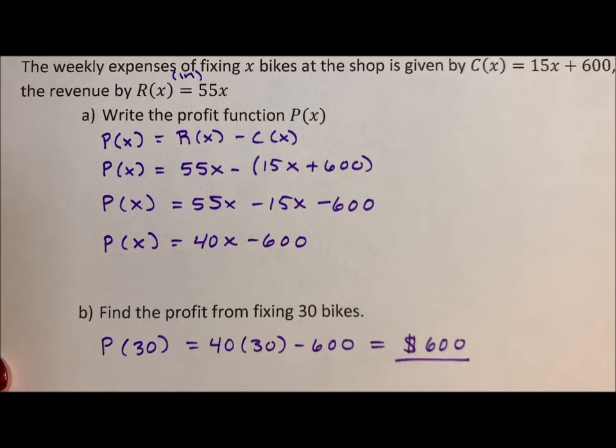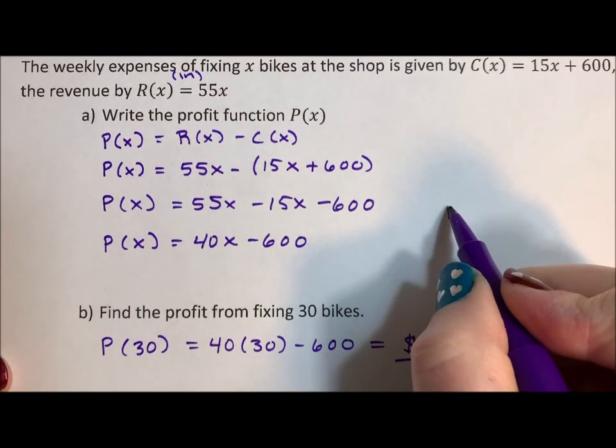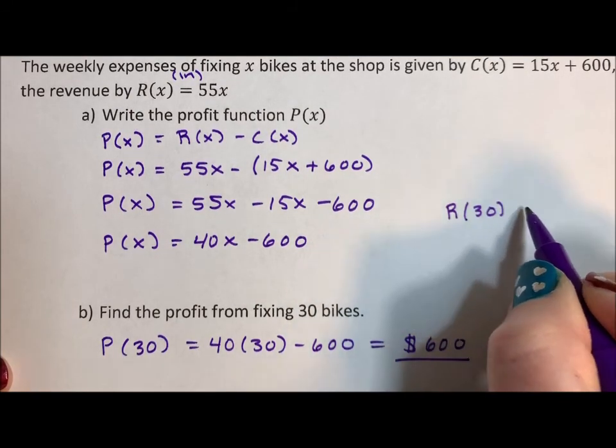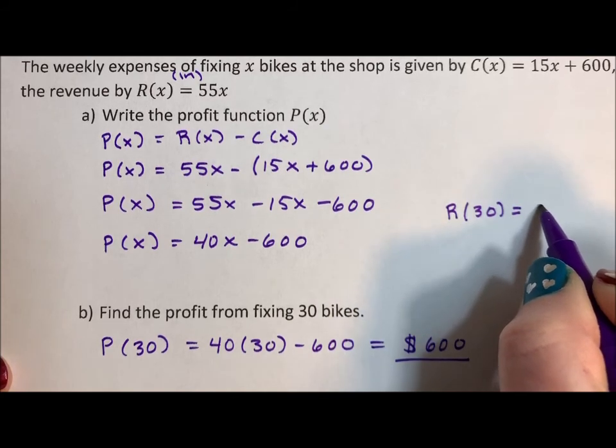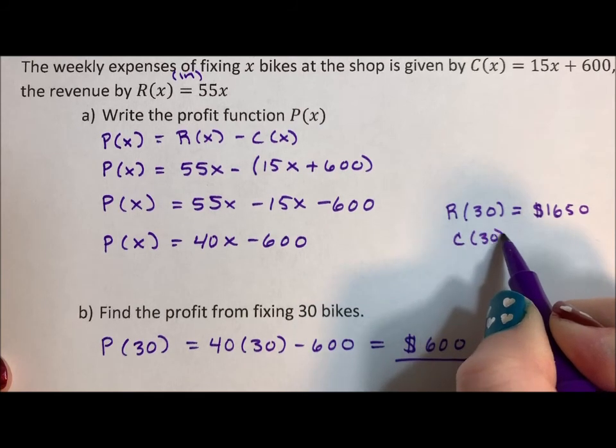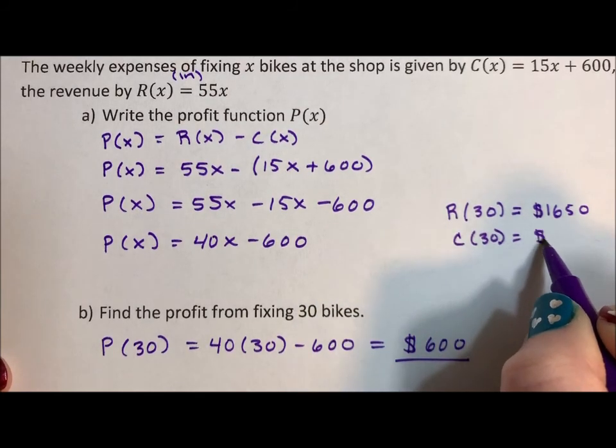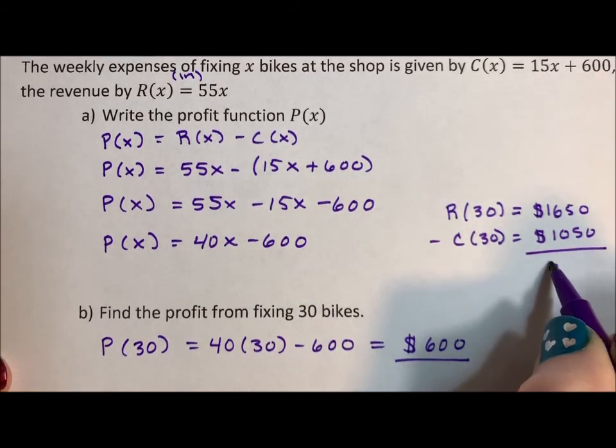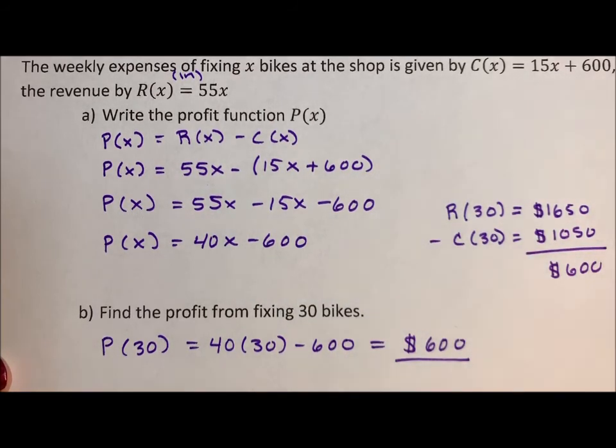Now we could have figured it out from the problems we had above. We figured out already that the revenue of 30 bikes, if we look above, was $1,650, and the cost of 30 bikes being fixed was $1,050. And if we just subtracted those, we would have gotten $600. But if we had to figure out a ton of different profits, figuring out the profit function would be faster and easier.